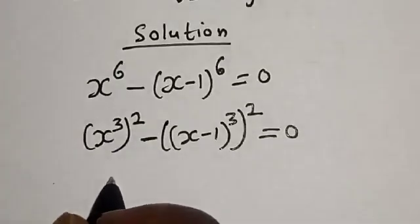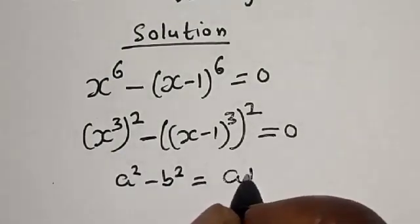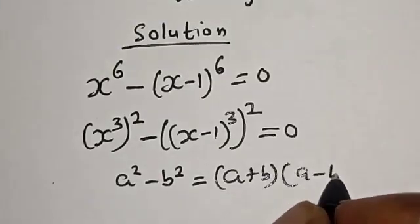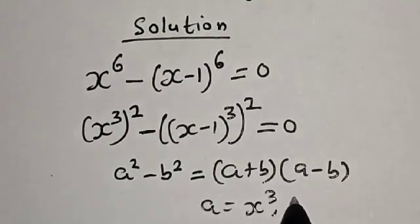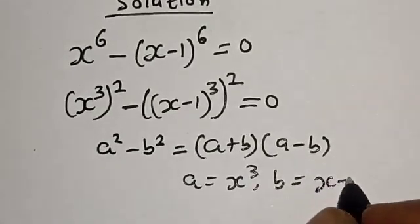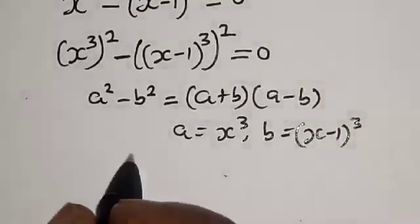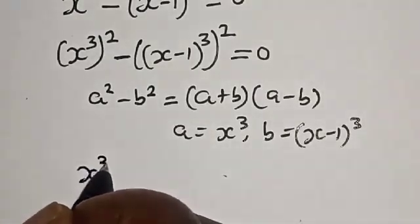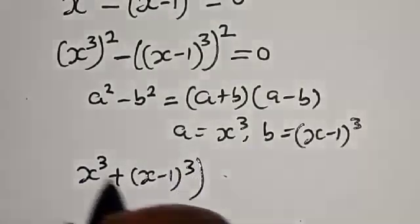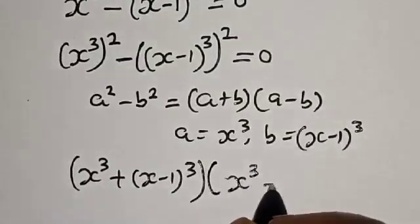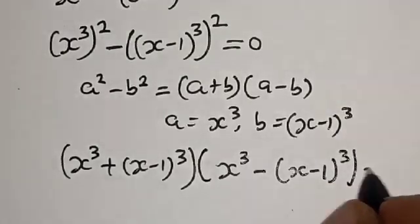So x raised to power 3 squared minus x minus 1 raised to power 3 squared is equal to 0. This is a difference of two squares: a squared minus b squared equals a plus b multiplied by a minus b, where a is equal to x raised to power 3 and b is equal to x minus 1 raised to power 3. So we have x raised to power 3 plus x minus 1 raised to power 3 multiplied by x raised to power 3 minus x minus 1 raised to power 3 is equal to 0.